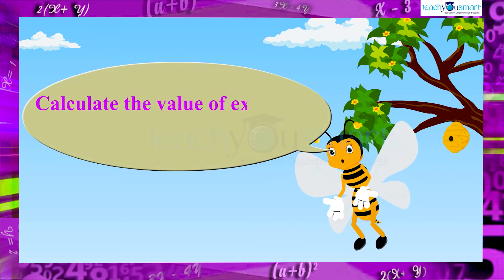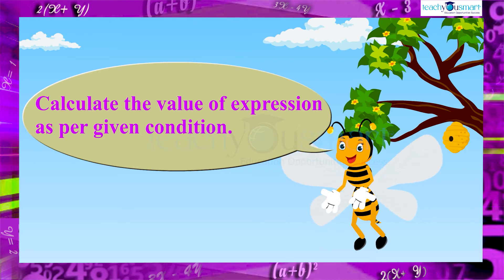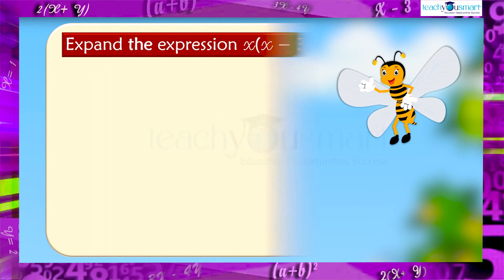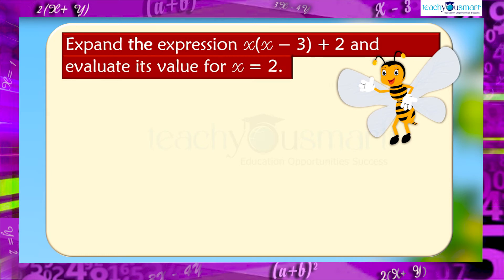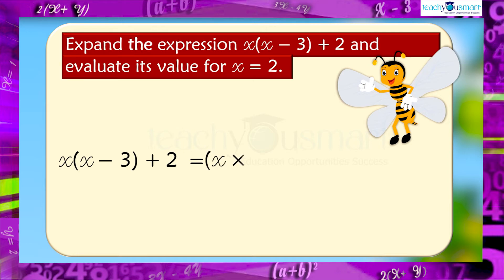Now try to calculate the value of an expression as per a given condition. Let's see. Expand the expression x multiplied by x minus 3, plus 2, and evaluate its value for x equals 2. First we have to expand: x multiplied by x minus 3 plus 2, equals x multiplied by x minus x multiplied by 3 plus 2, equals x squared minus 3x plus 2.